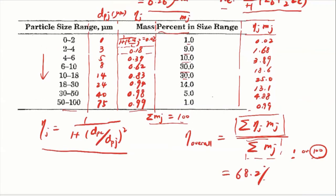The final answer is 68.2% overall collection efficiency for this cyclone. To summarize the process: first derive the cutoff size DPC, then calculate the collection efficiency ηj for particles within different size bins, and since we know the mass concentration in each size bin, we calculate the final overall collection efficiency. You'll get more practice with this in your homework — I think there are two problems related to this calculation process.